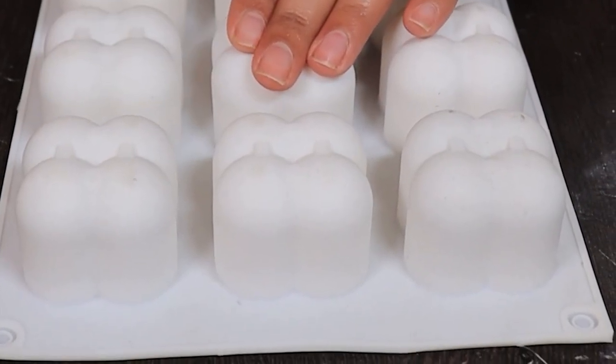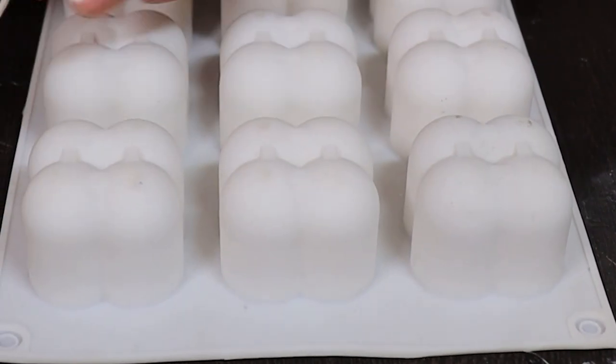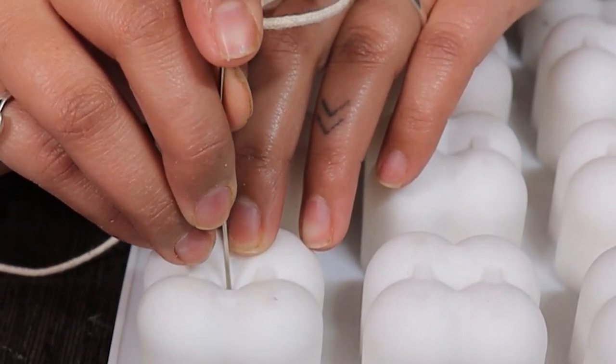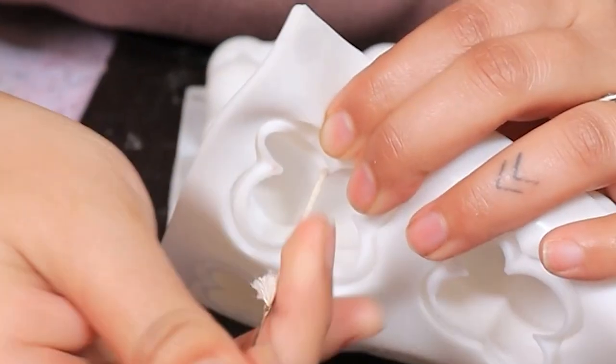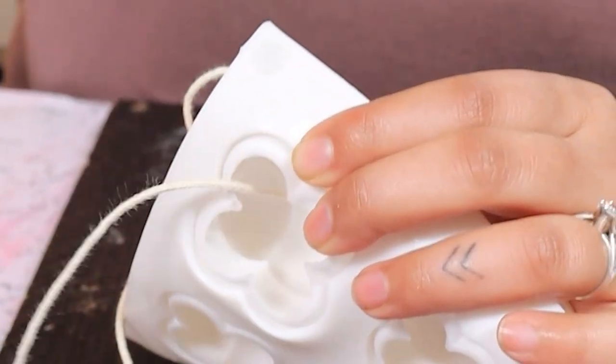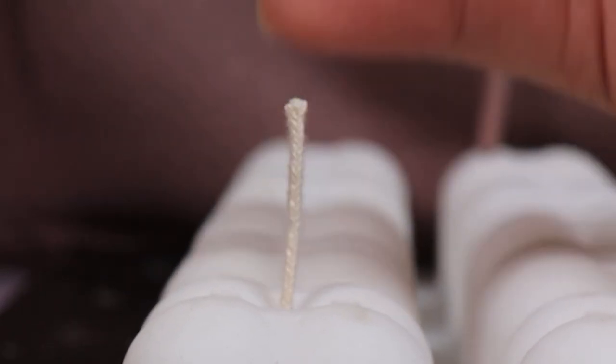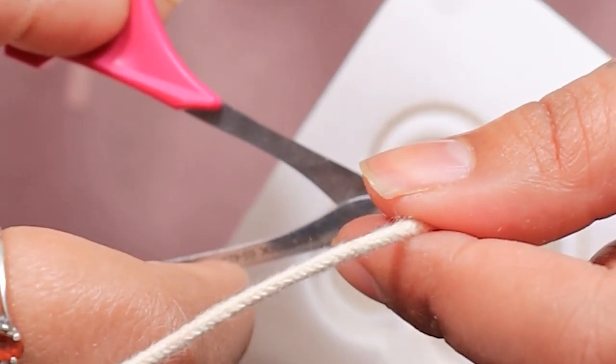Turn the mold upside down, take your needle and pierce the center of the mold, taking it out on the other side. Leave about 1 inch of the wick outside the mold, some here and give it a cut.